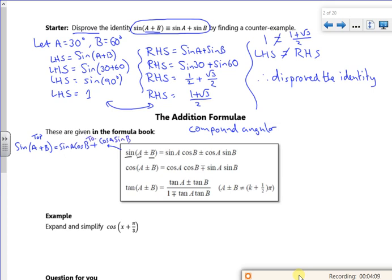But if I wanted sine of A minus B, the minus is on the bottom. I'm pointing to the borders if you can see me. The minus is on the bottom. So when I choose the sign on the right hand side, I need to choose the bottom sign. So that would be the bottom sign on the right hand side is a minus. So that would be sine A cos B minus cos A sine B.